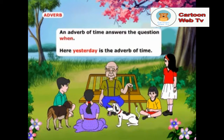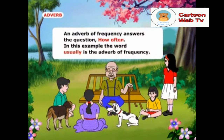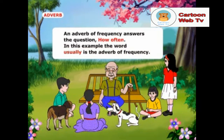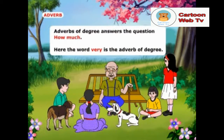An adverb of time answers the question when. Here, yesterday is the adverb of time. An adverb of frequency answers the question how often. In this example, the word usually is the adverb of frequency. Adverbs of degree answer the question how much. Here, the word very is the adverb of degree.